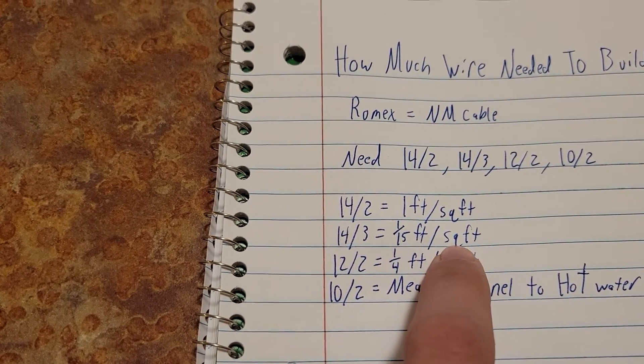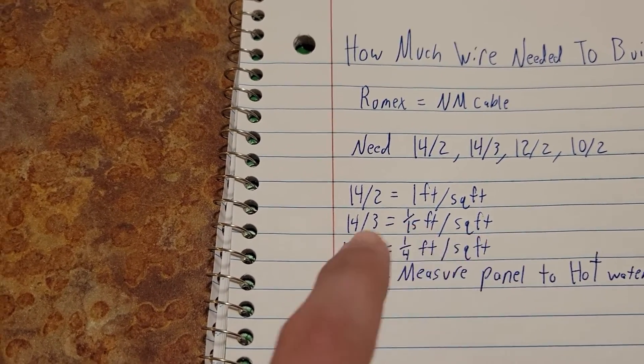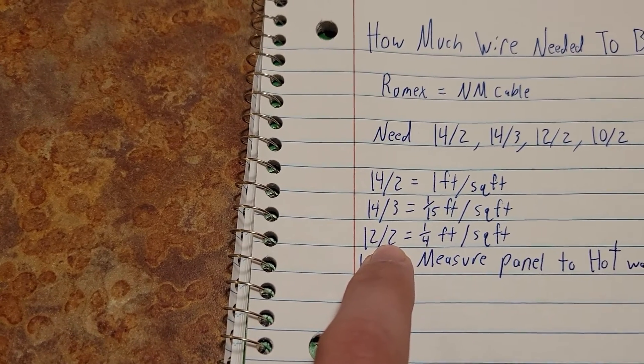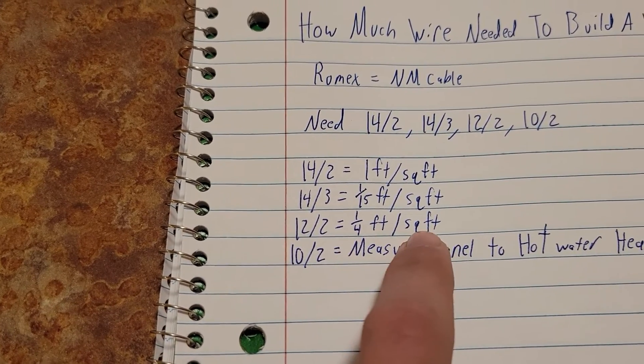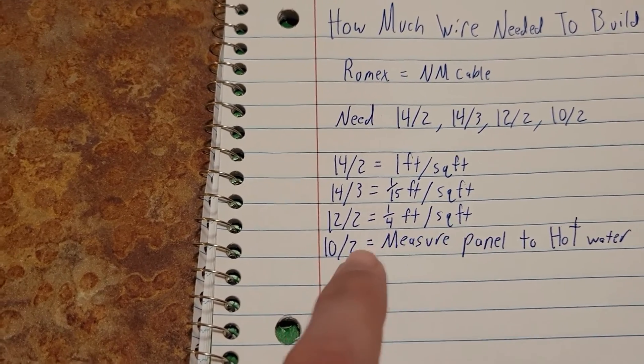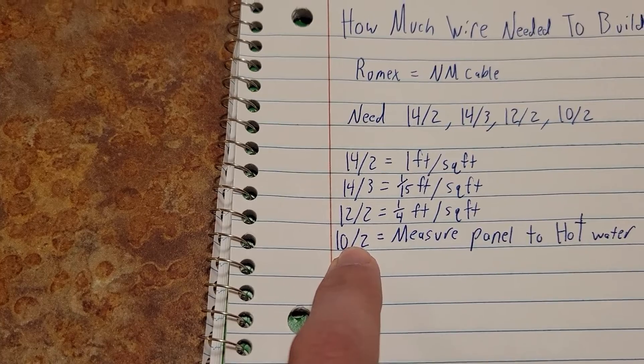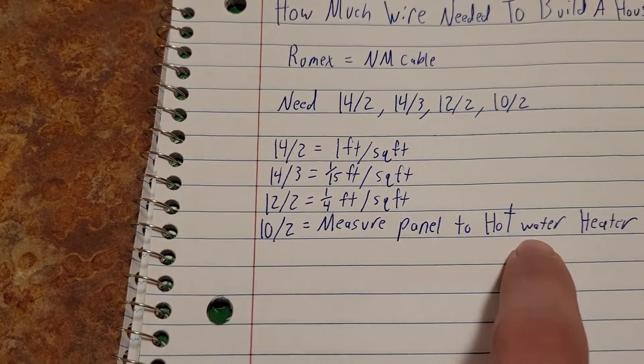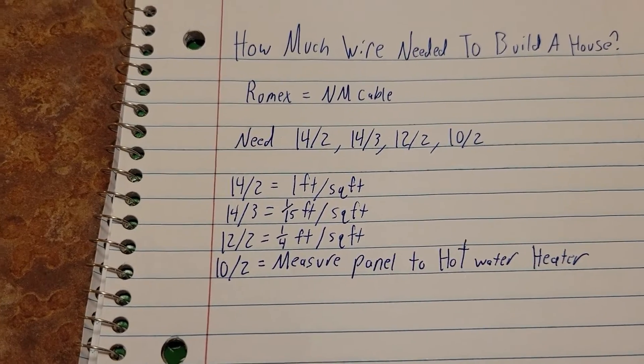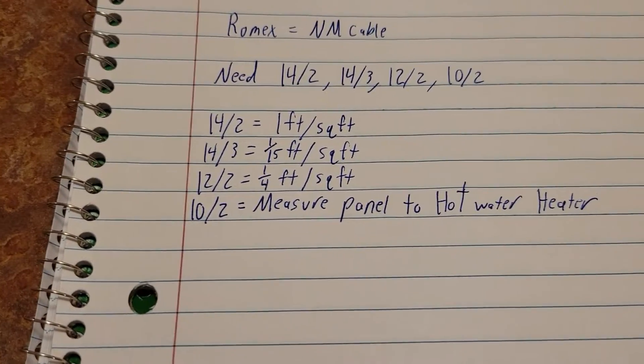To get the amount of 12/2 you're going to need, you're going to multiply 1/4 of a foot per square foot of the house. And to get the amount of 10/2 you're going to need, you're going to need to measure from your panel to your hot water heater location. That one I don't really have a good formula for because people put their hot water heaters in all different kinds of places, but the 10/2 is only needed for the hot water heater.